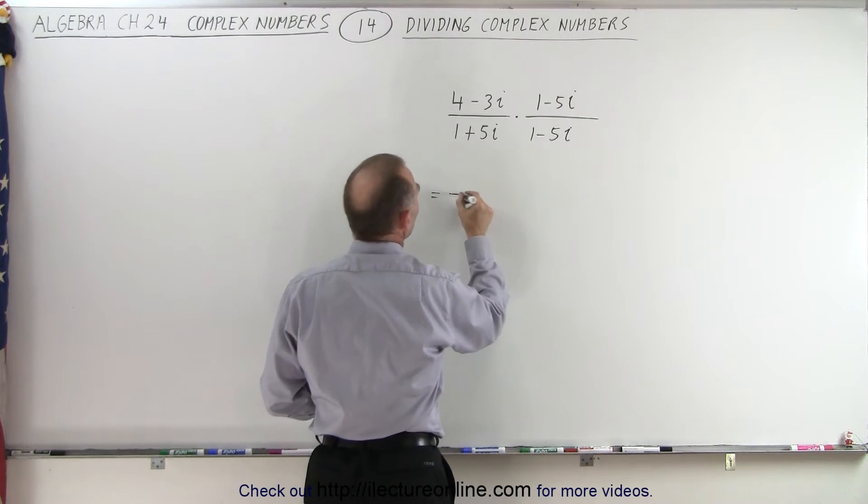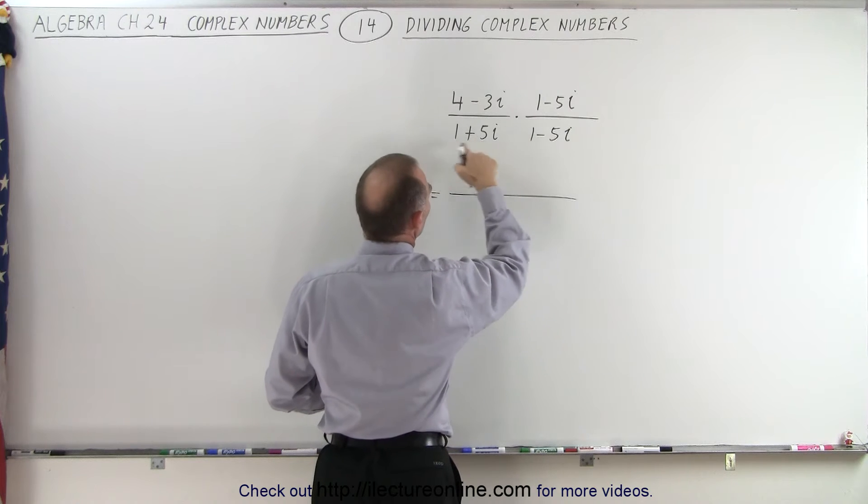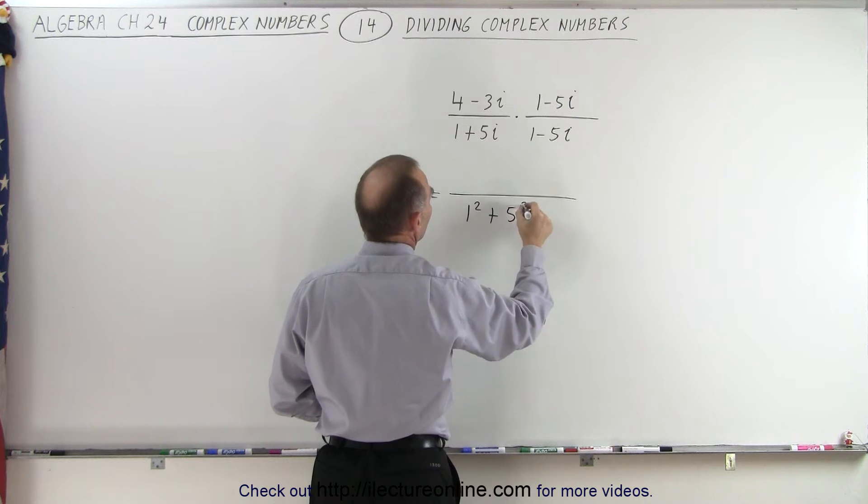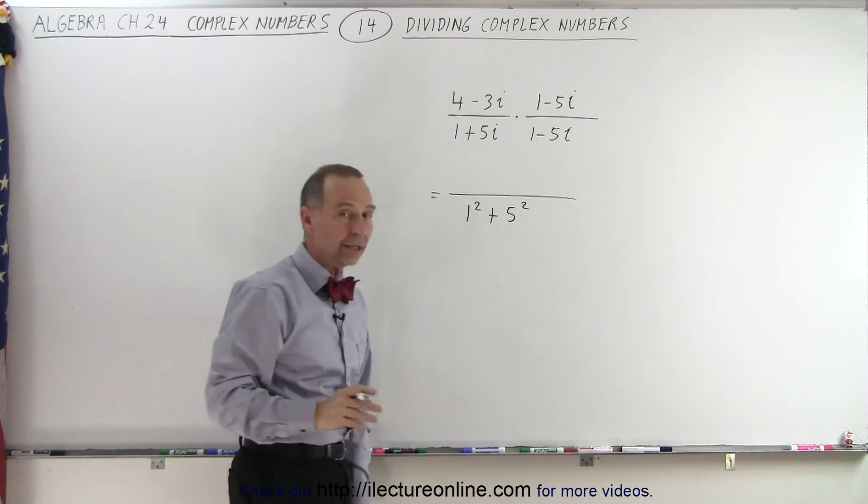So in the denominator we end up with the first number squared plus the coefficient of the last number squared. So notice we get a real number in the denominator.